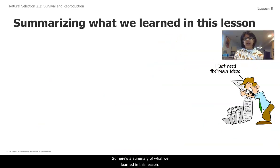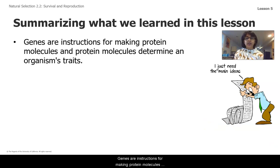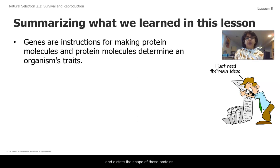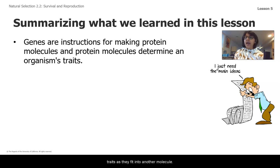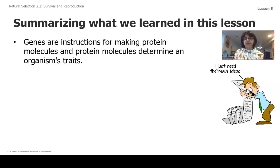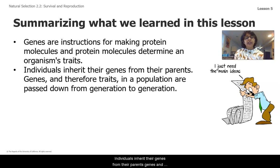Here's a summary of what we learned in this lesson. Genes are instructions for making protein molecules and dictate the shape of those proteins. Those protein molecules determine an organism's traits as they fit into another molecule. Individuals inherit their genes from their parents.